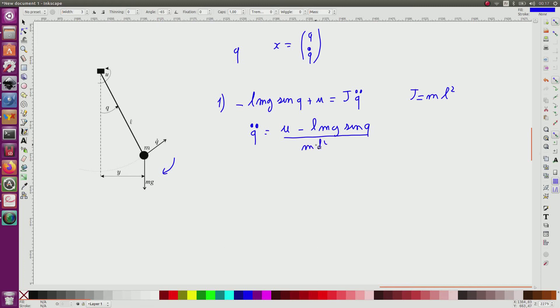So now since we have taken the state Q, Q dot, we can write that the derivative of the state, so the state is Q, Q dot. So this one will correspond to Q dot, and this one will correspond to U minus MgL sin Q.